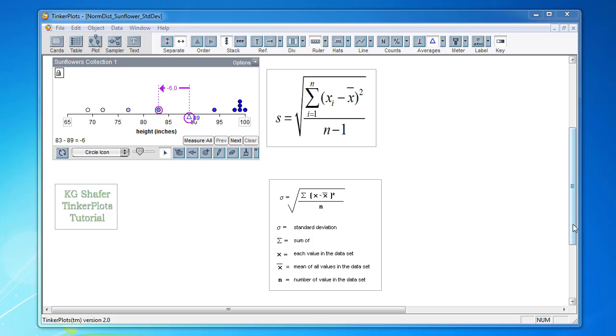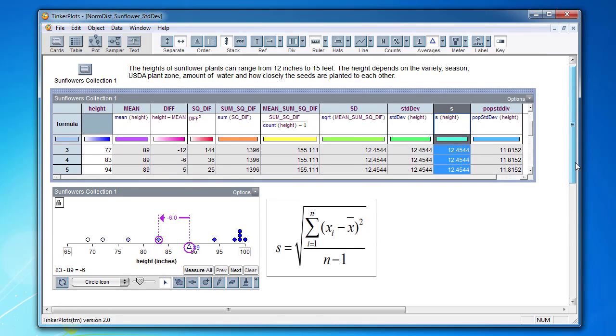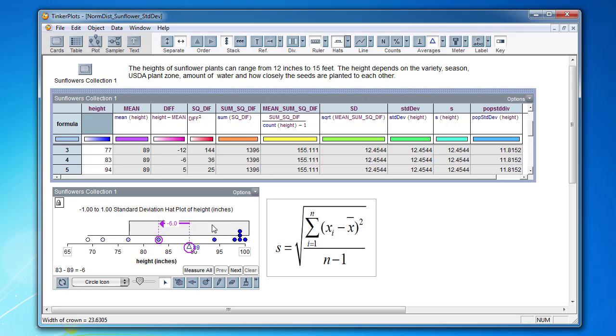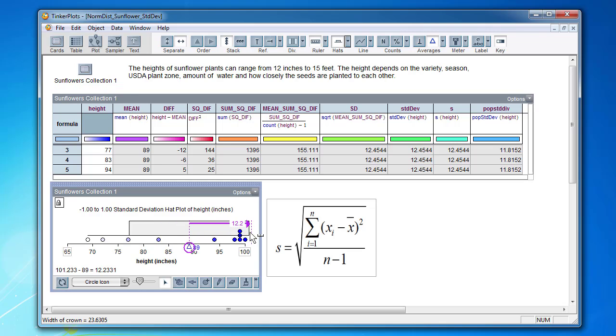The last thing I want to show you is the standard deviation hat plot in Tinker Plots. So let's go ahead and put this hat plot on, and let's change it to the standard deviation hat plot. What I want to show you is which of these two formulas Tinker Plots is using. So when we snap from the mean up to the third quartile, we get the 11.8. So you can see that it is actually using the population standard deviation.